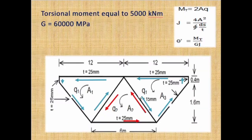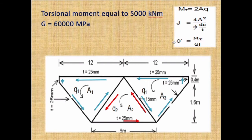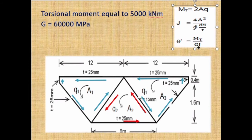For finding these values, we use some equations from torsion studied earlier: mt is equal to 2AQ; J is equal to 4A squared over the sum of ds over dt, where ds over dt is simply the length over thickness; and theta dash is equal to mt over GJ. The moment and G are given, so we have to find J, theta, and Q.